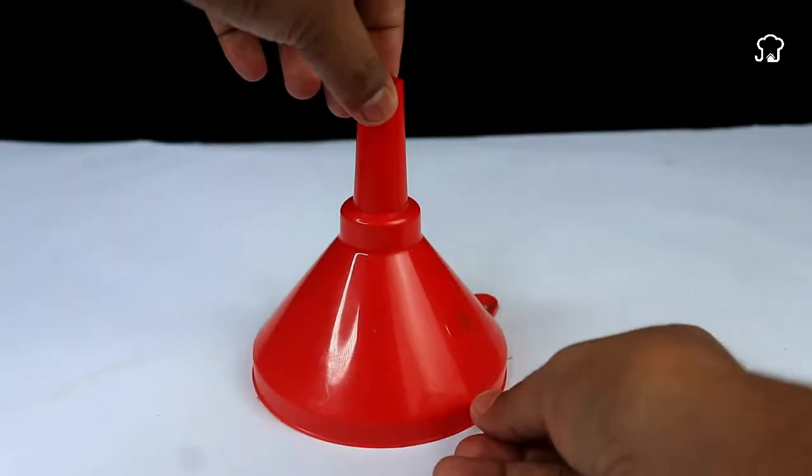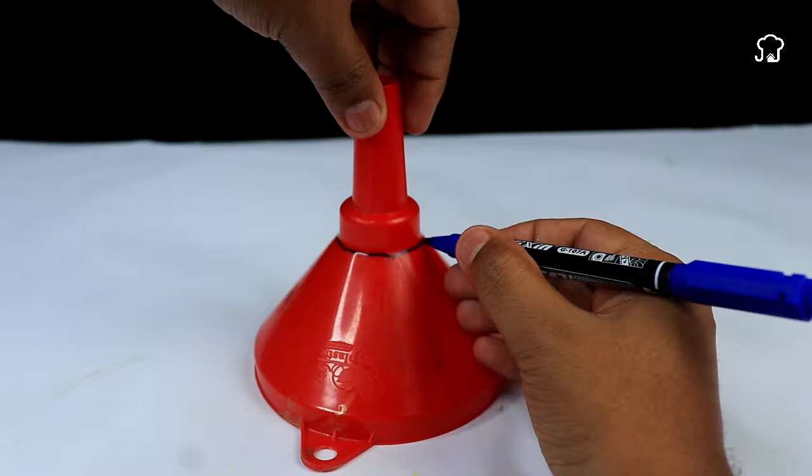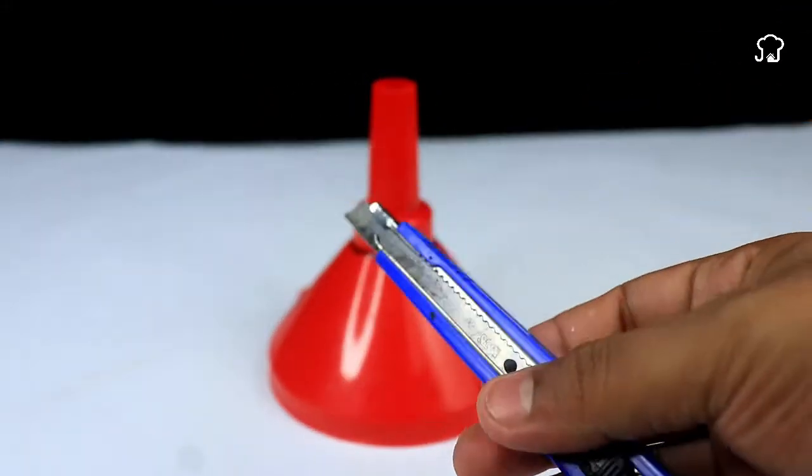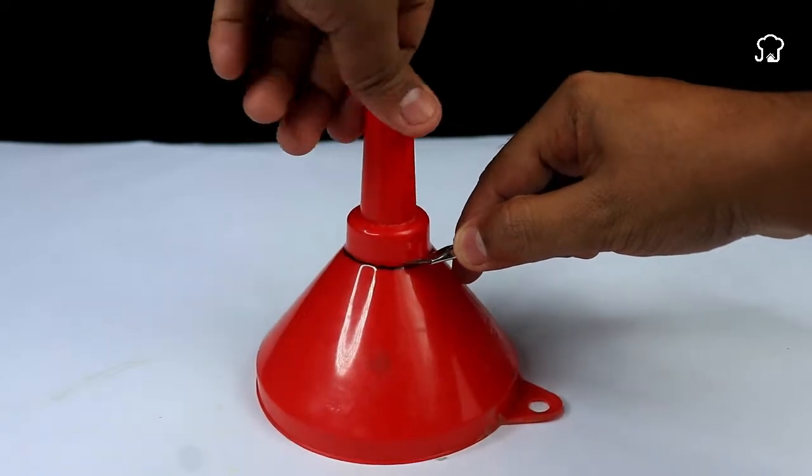First, we will take a plastic funnel and use a marker to draw a dividing line around the base of the funnel. With the help of a cardboard, we will carefully cut out the marked part of the funnel.